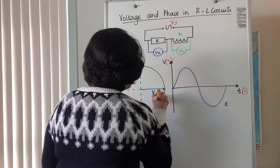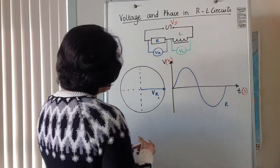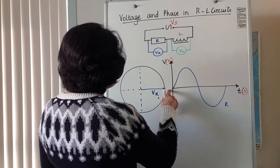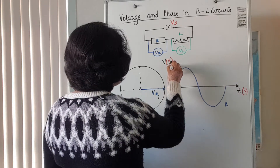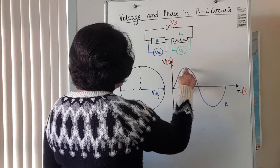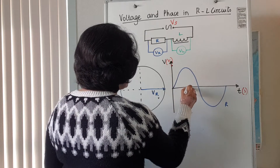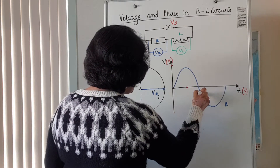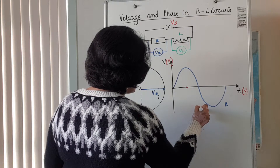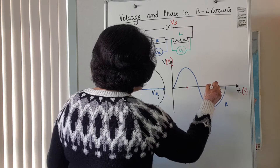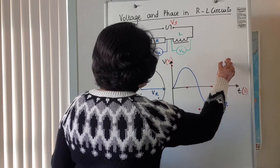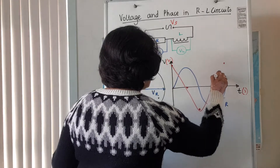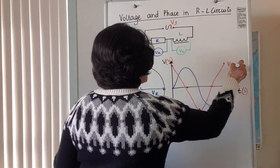That is the voltage across the system. When the voltage across the resistor is zero, the voltage across the inductor is at a maximum. When the voltage across the resistor is a maximum, the voltage across the inductor is zero. And when the voltage across the resistor is zero again, the voltage across the inductor is at a negative maximum, and so on.